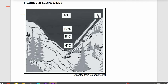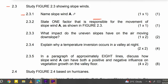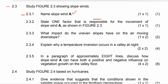Question 2.3.1 says: name slope wind A. So we have to name this slope wind that is blowing downwards. Remember, katabatic winds blow down the hill during the night, while anabatic winds blow up the mountain during the day. So wind A is a katabatic wind.